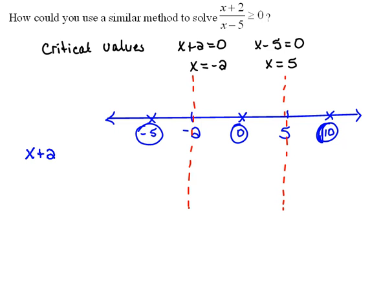Now we're going to look at each one of the pieces, the x plus 2 first. If I were to plug in anything to the left of negative 2, like say negative 5, negative 5 plus 2 would be a negative number. If I plugged in 0, 0 plus 2 would be a positive number. And to the right, if I chose 10, 10 plus 2 would be a positive number.